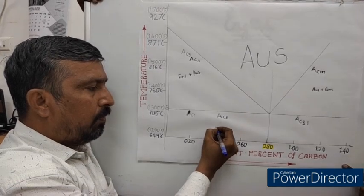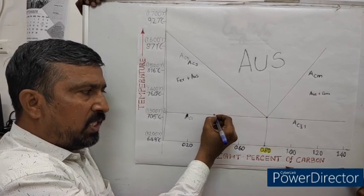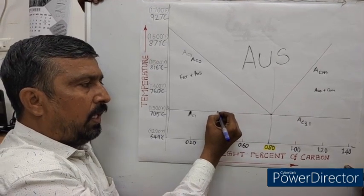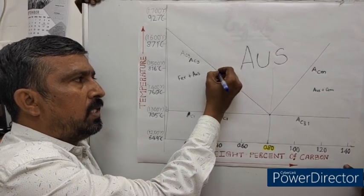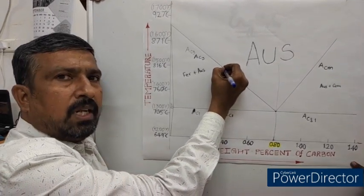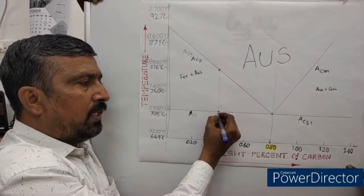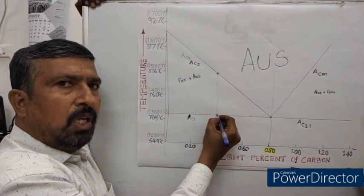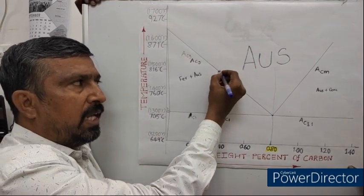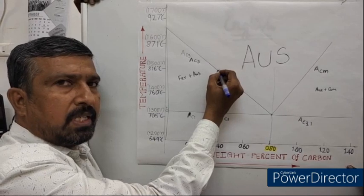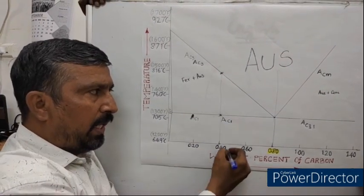If we consider 0.4% carbon steel on heating, this is the temperature at which the transformation starts, and on further heating, this is the temperature at which the transformation ends. So where the transformation starts, this temperature is the lower critical temperature, and where the transformation ends, this temperature is the upper critical temperature. This is for hypo-eutectoid steel.